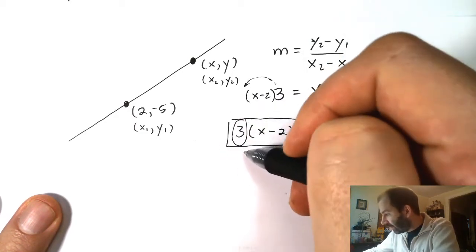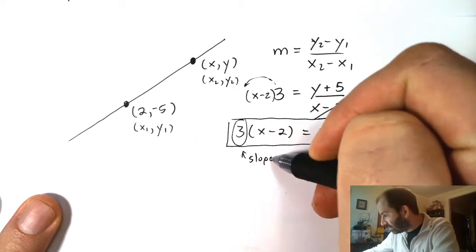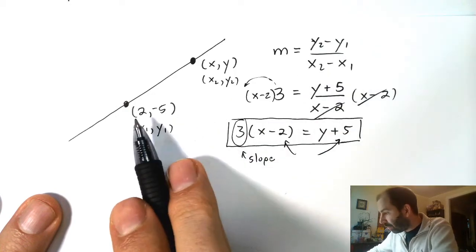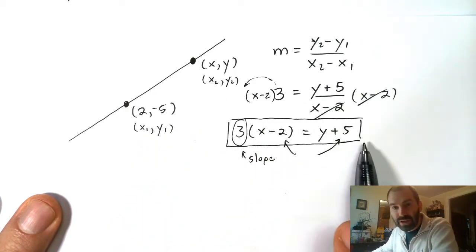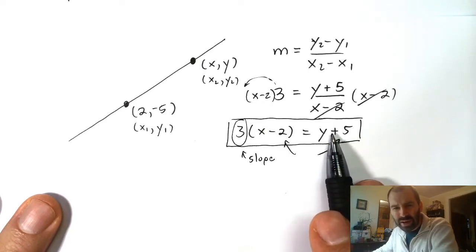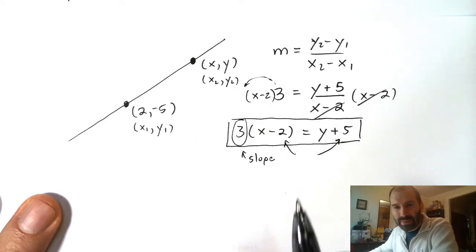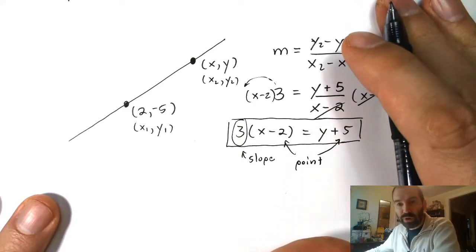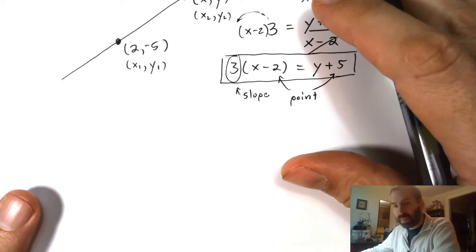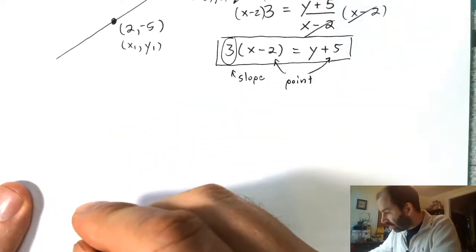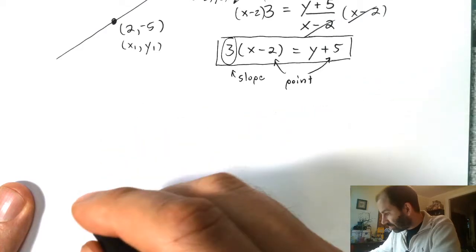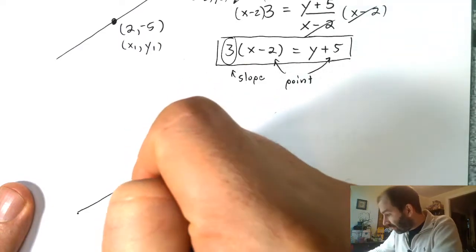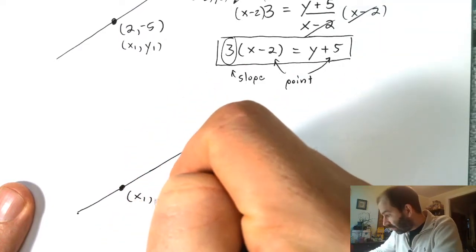We've got the slope sitting right here. And the coordinates of our point are in here — our point was (2, negative 5). Here's the 2, here's the negative 5. It's got a plus because we were subtracting a negative. Let me show you what happens in more generality. Instead of using specific numbers, I'm going to use just letters. I'll call this x1, y1, and call this (x, y).